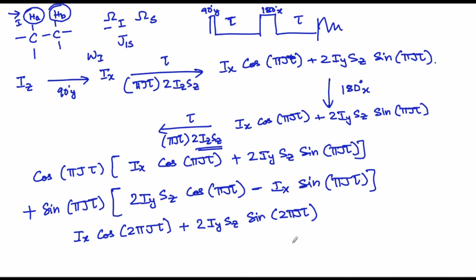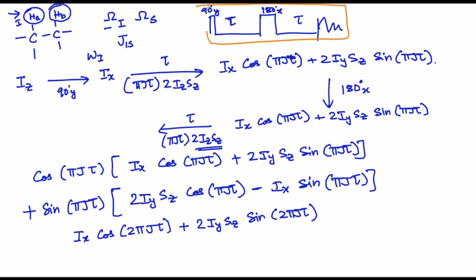As we go to subsequent classes, you will see how robust this module is in helping us unravel many important phenomena. Let us continue. What we have understood so far is that the spin echo module — the τ-180-τ module — refocuses chemical shift and results in scalar coupling evolution if the 180 degree pulse is felt by both spins.